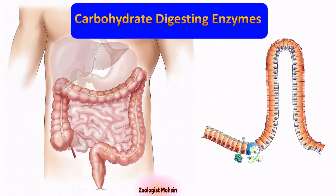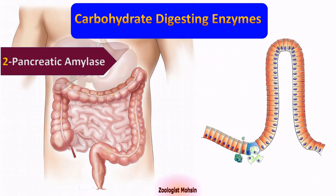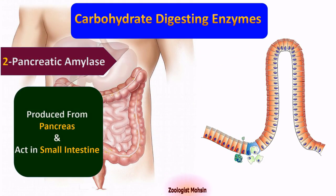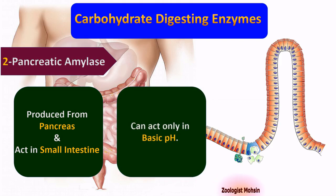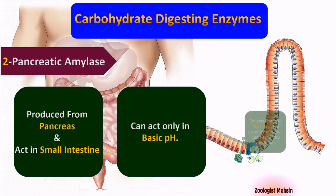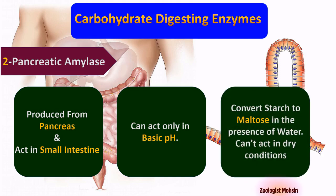Number two: pancreatic amylase. Pancreatic amylase is produced from the pancreas and acts in the small intestine. It can act only in basic pH, that is more than 7. Pancreatic amylase converts starch to maltose in the presence of water and cannot act in dry conditions, just like salivary amylase.